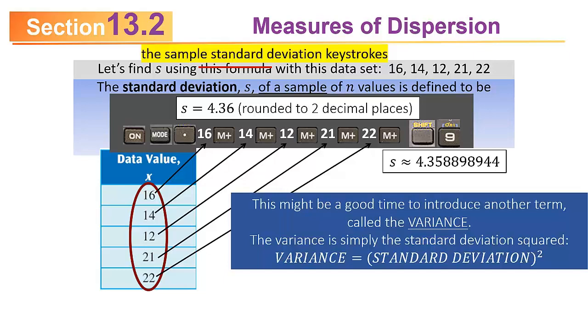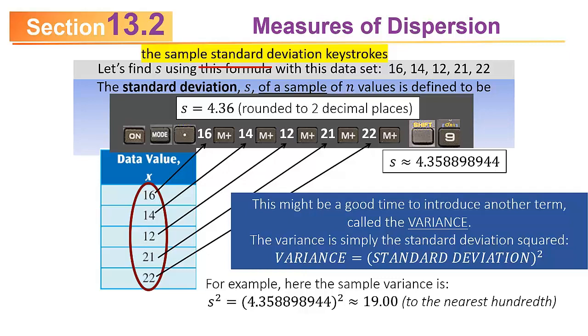This might be a good time to introduce a new term called the variance. The variance is nothing but the standard deviation squared. So once you get the standard deviation, if you want the variance, you just square it. For example, in this problem, the standard deviation was 4.358898944. If you square that, you get the variance. Rounded to two decimal places, you'd get 19.00. But do not use the rounded standard deviation to calculate the variance. Take the unrounded value, square it, and then round it.